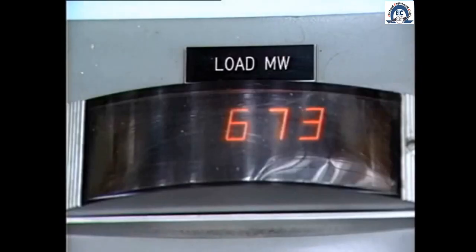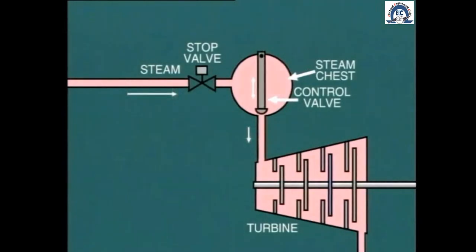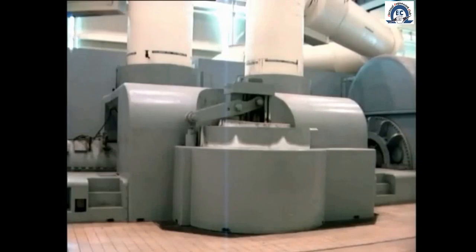The principle of turbine control is very simple. If we need to increase the power output of the turbine, we have to pass more steam through the turbine. Conversely, in order to decrease power output, it is necessary to decrease the amount of steam admitted to the turbine. Turbine steam flow is controlled by adjusting the turbine admission valves, or control valves as they are often called.